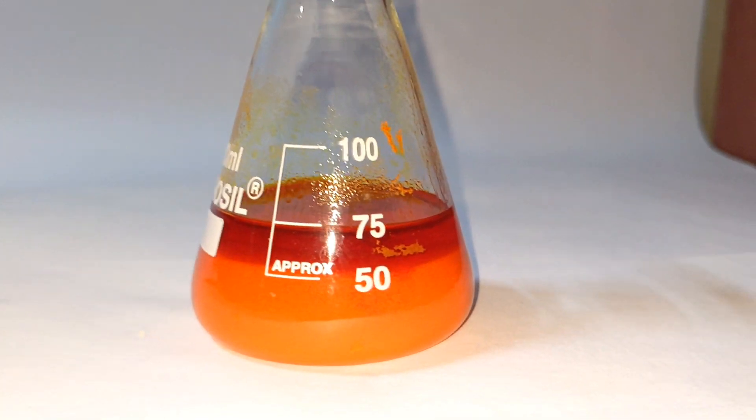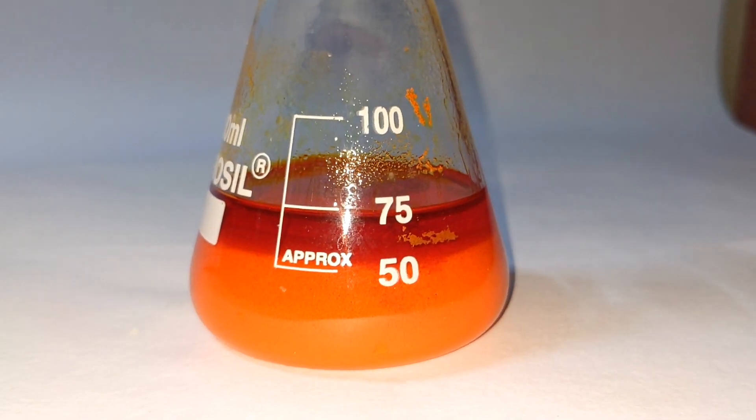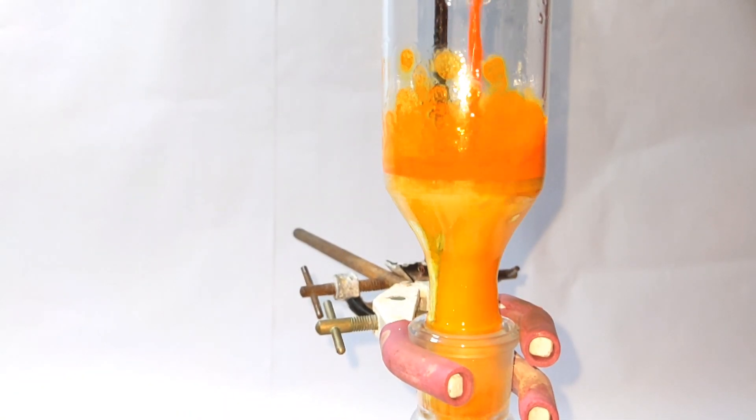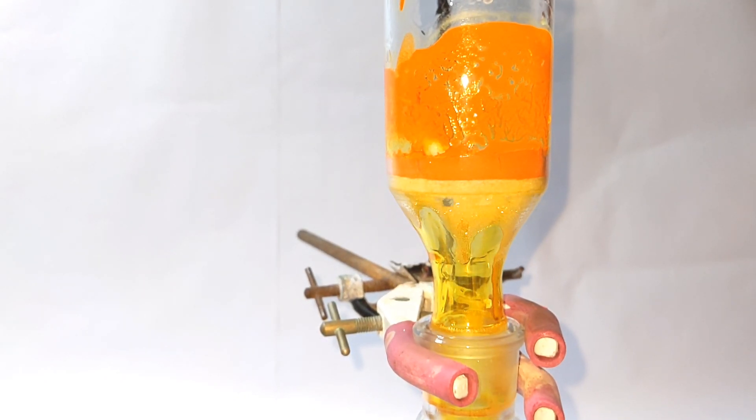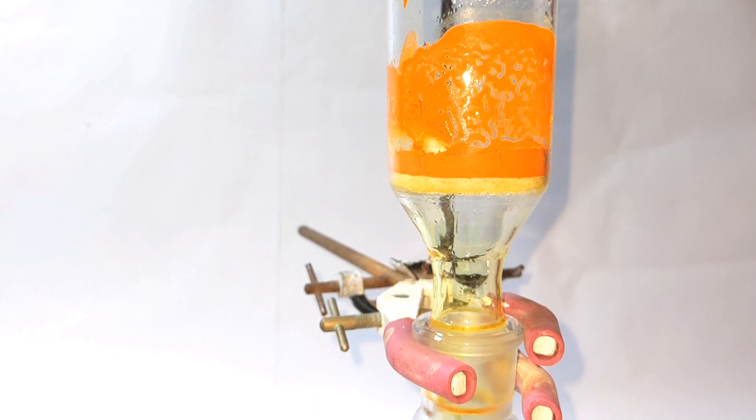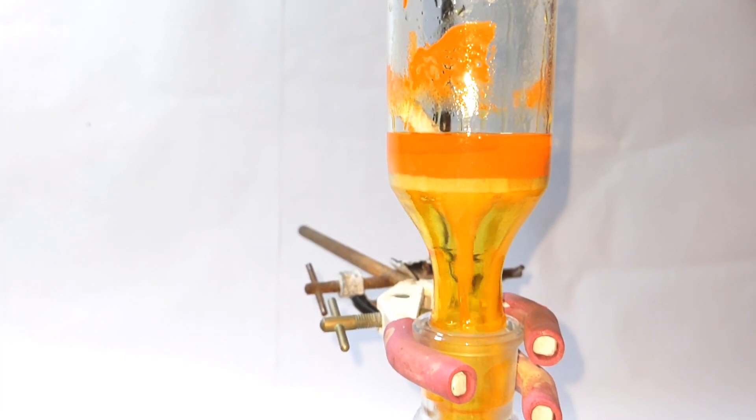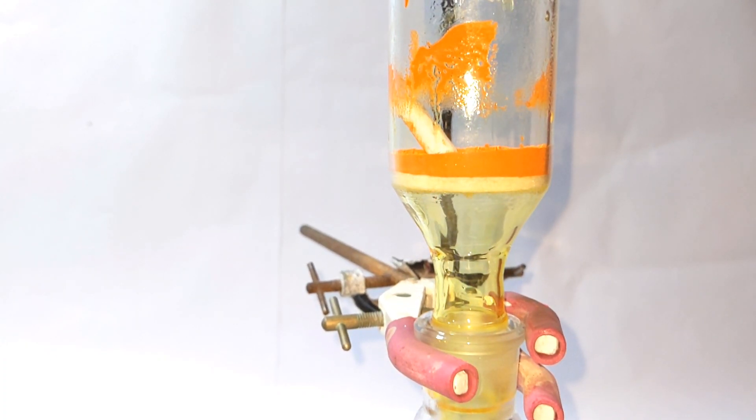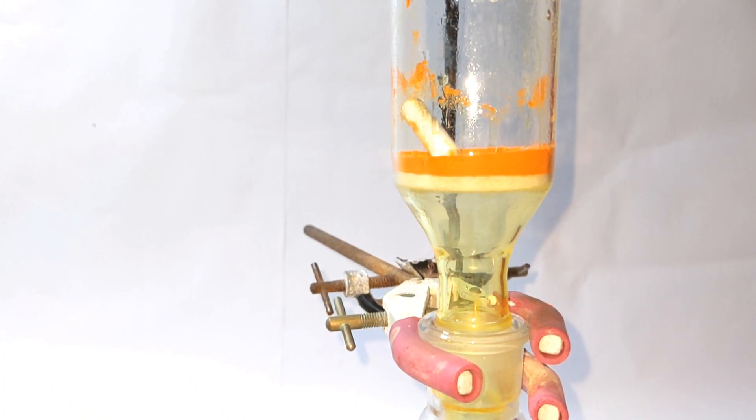After 15 minutes the flask was taken out and cooled to room temperature. You can see the product settling down to the bottom of the flask. Now use a vacuum filtration method to collect the crude crystals. Then the crude product was washed a couple of times with ice cold distilled water ethanol mixture, one to one mixture, and then the vacuum was kept on so that the product dries up.